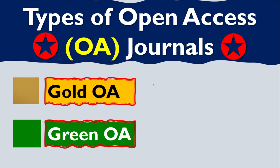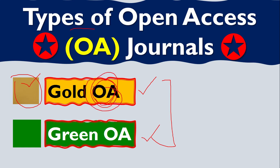Let's talk about types of open access. There are basically two types. The first one is gold open access — you will see the symbol something like this in this color. The second one is green open access. The first one, gold open access, is very common, but the second one is less common. I'm going to explain these two open access journals in detail, but first let's restate what open access journals are.